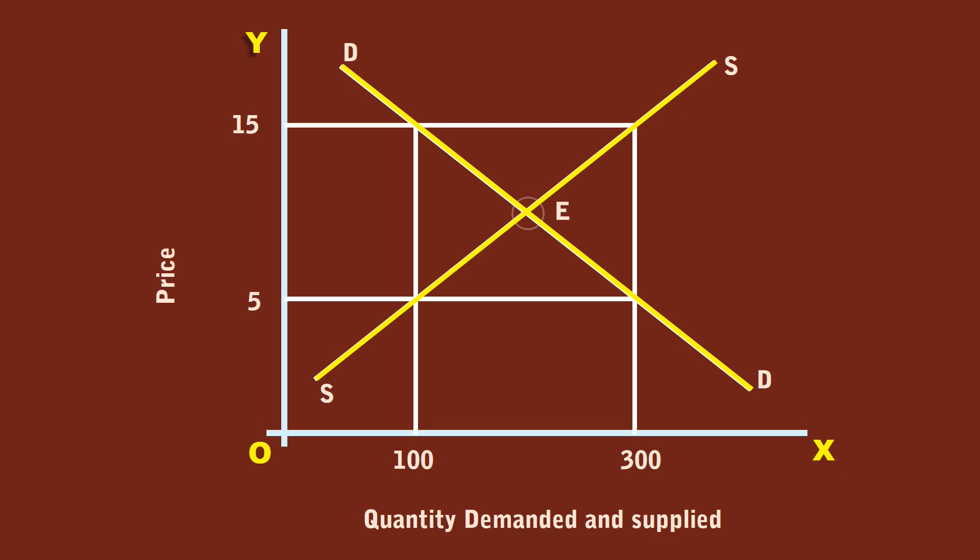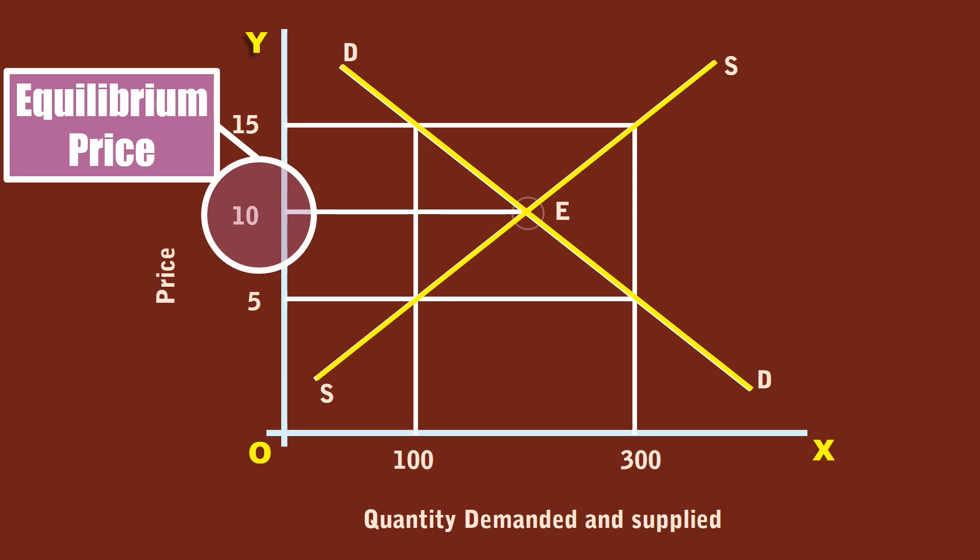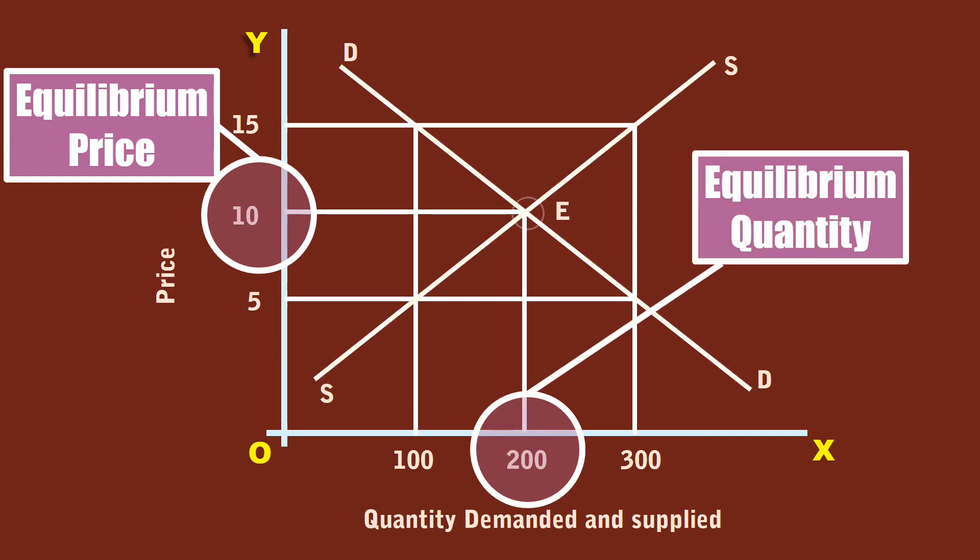At point E, the price is Rs. 10. This is the equilibrium price. Quantity is 200 units. It is called equilibrium quantity. Rs. 10 price is agreeable to both buyers and sellers. Hence, it is called as the equilibrium price.